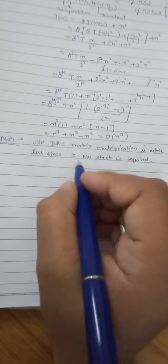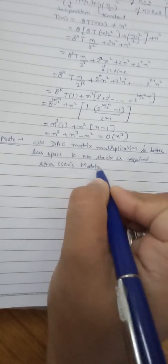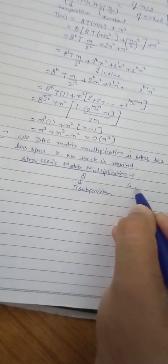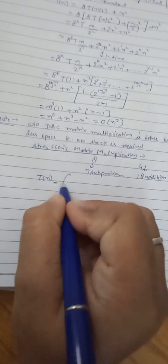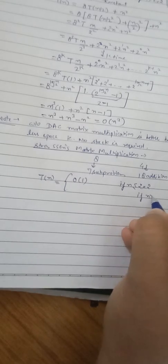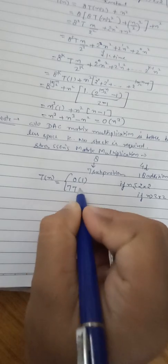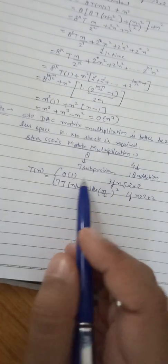Instead of the standard approach, if we use Strassen's matrix multiplication, it gives better results in terms of multiplication count. Instead of 8 sub-problems, it reduces to 7 sub-problems, and instead of 4 additions, it requires 18 additions. The Strassen recurrence relation is: T(n) = O(1) if n ≤ 2×2, and T(n) = 7T(n/2) + 18·(n/2)² if n ≥ 2×2.